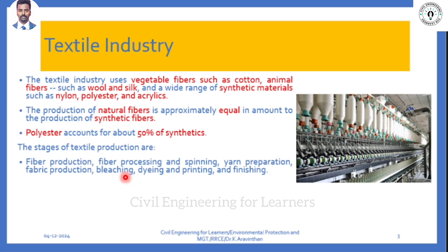The textile industry produces waste in each and every process. These are: fiber production, where they take the cotton; fiber processing; and spinning. Spinning is extracting cotton into yarn. You have to derive the fiber from the plant and then make it into a thread. That first part - deriving cotton and making it into a thread - is called spinning and yarn preparation.